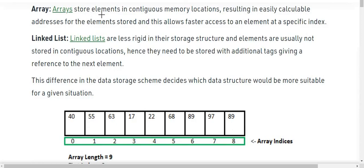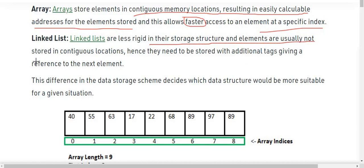Arrays store elements in contiguous memory locations resulting in easily calculable addresses for the elements stored and allowing faster access to elements at specific indices. While linked lists are less rigid in their storage structure and elements are usually not stored in contiguous memory locations, hence they need to be stored with additional tags giving a reference to the next element.